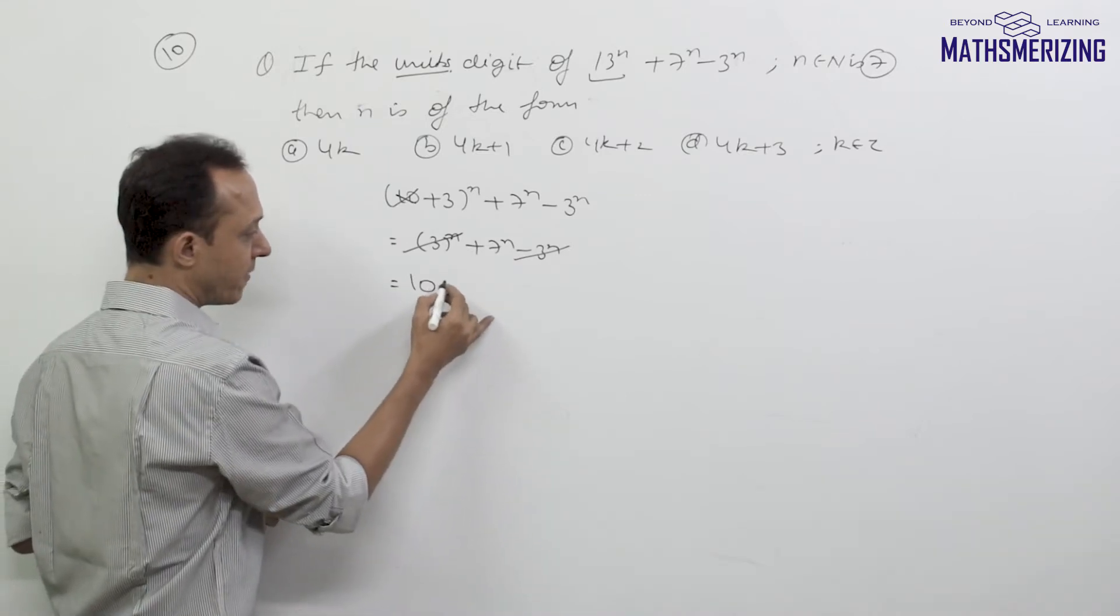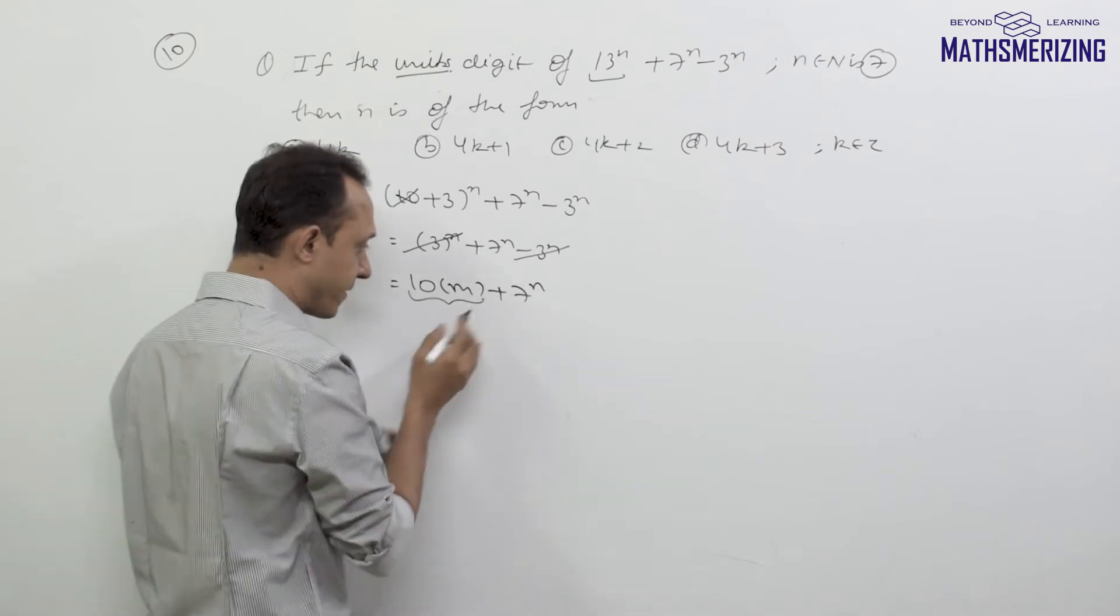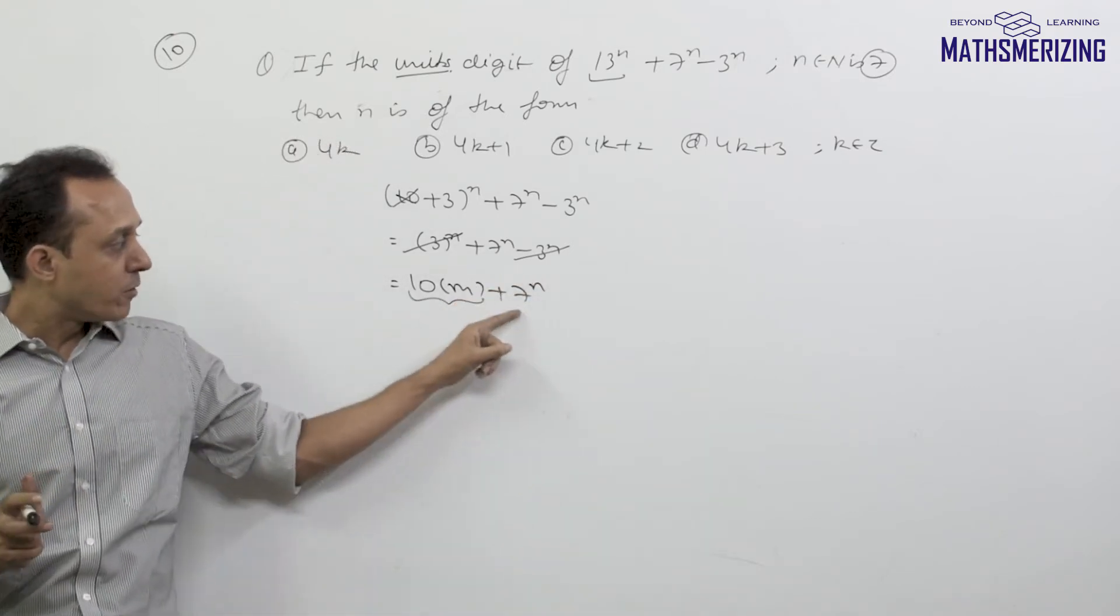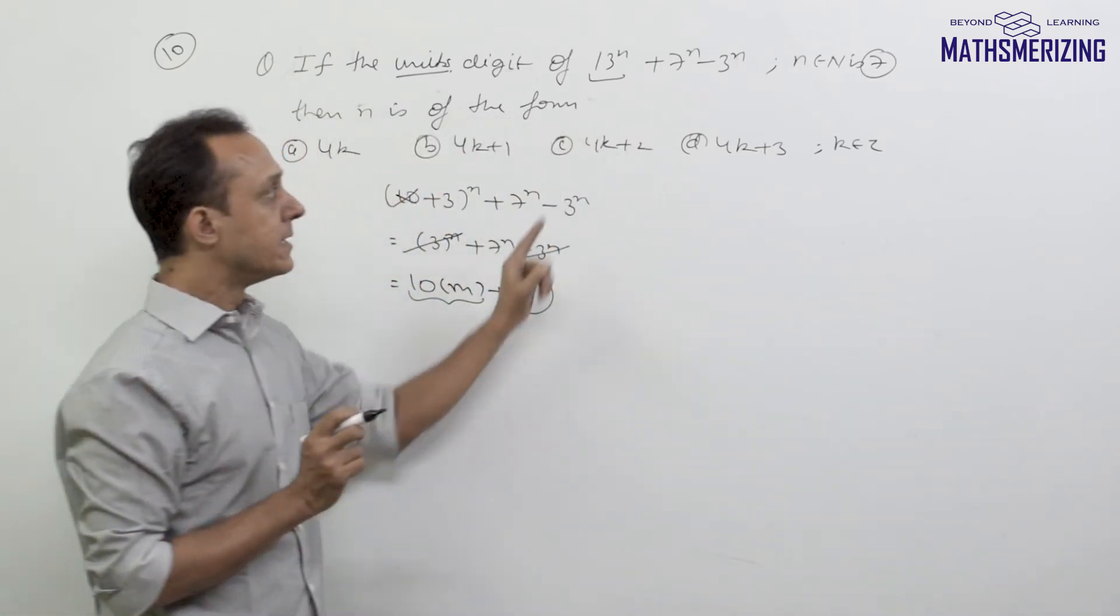I will get some multiple of 10 plus 7^n. This multiple of 10 does not change its units place, so I have to find the value of n so that its units place will be 7.